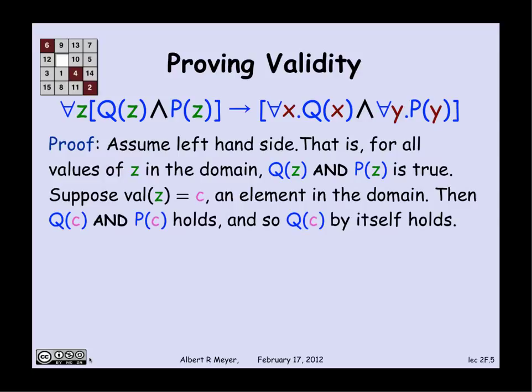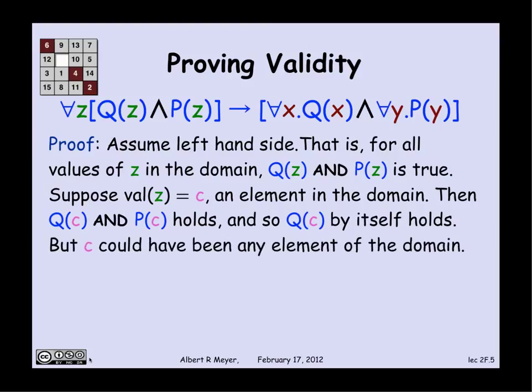So now we're in an interesting situation because we just proved that Q of c holds, and we know nothing and have assumed nothing about c, except that it's an element of the domain. c could have been any element of the domain, and we've managed to prove that Q of c holds. So it follows that, in fact, we have really proved that for every x, Q of x holds.